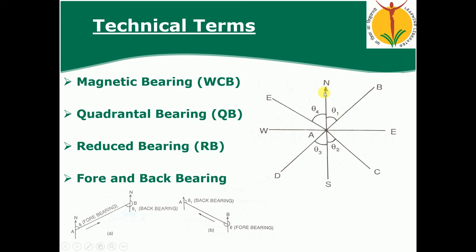The next designation is quadrantal bearing. This is the bearing measured from magnetic north or magnetic south pole, in a clockwise or anticlockwise direction, whichever is nearest. For line AB, the angle theta1 measured from north is the quadrantal bearing. For line AC, the nearest reference is south, so theta2 is specified as South theta2 East. In quadrantal bearing, we must always specify the quadrant.